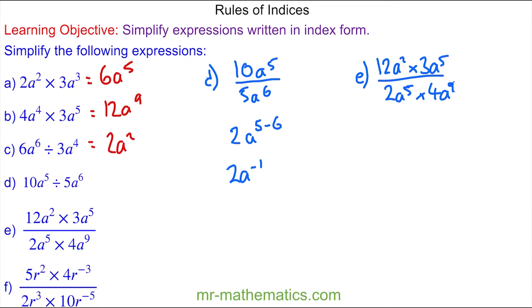For question E, I'm going to work out the numerator first. So we have 12 times 3 which is 36, and then we can add the powers — the 2 add the 5 is 7 — so 36a to the power of 7. Then for the denominator, 2 times 4 which is 8, and 5 add the 9 which is 14.